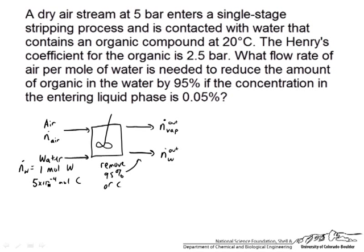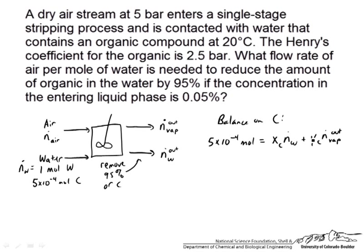Let's start by doing a simple balance on the contaminant. We have 5 times 10 to the minus 4 moles coming in based on our 1 mole basis of the liquid stream. This is equal to the fraction in the liquid phase coming out times N_dot_W out, plus the fraction in the vapor phase coming out times N_dot_vapor_out. We are going to need some relationships to know how much is in the liquid and the vapor. The assumption we will make is that the molar flow rate of the liquid stays constant.